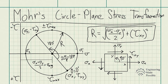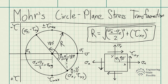Once you calculate the radius and average normal stress and plot Mohr's circle, it becomes straightforward to solve for the principal stresses and maximum shear stress — it's just geometry. And to solve for the angles at which the principal stresses occur, it's nothing more than normal trig. With the radius value as the hypotenuse, you can solve for unknown angles.